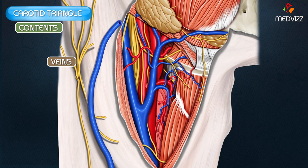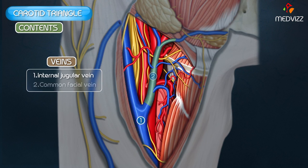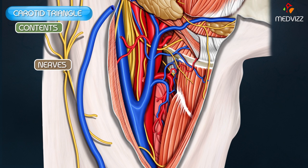The important veins seen in this triangle are the internal jugular vein and the common facial vein, which drains into the internal jugular vein. The pharyngeal vein and the lingual vein also usually terminate in the internal jugular vein. So all these veins terminate in the internal jugular vein.